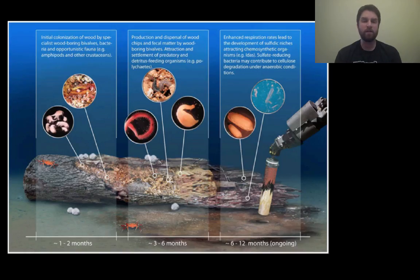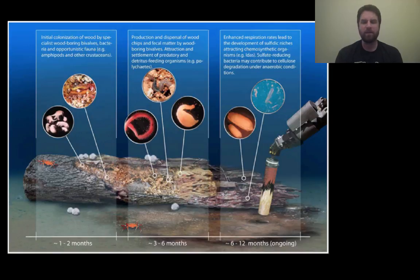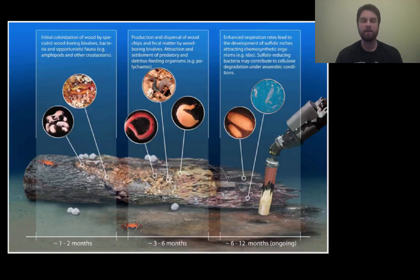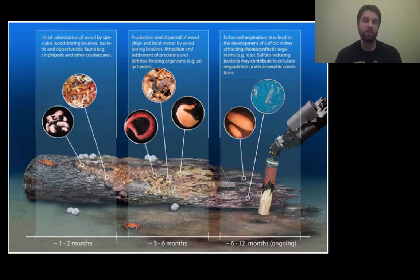A closer example is succession on a piece of driftwood at the bottom of the ocean. After a couple of months, you have an initial colonization of some bivalve species and opportunistic bacteria. In the three-to-six month period, these give way to more detritivore-type organisms and polychaetes. After about six to twelve months, there's been extensive respiration by those organisms, and you're getting things like sulfate-reducing bacteria that contribute to the rest of the ecosystem. That's an example of succession at the ocean floor.